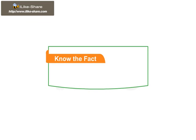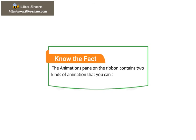Students, know the fact. The Animations pane on the ribbon contains two kinds of animation that you can add to video clips or photos: Transitions and Pan and Zoom.